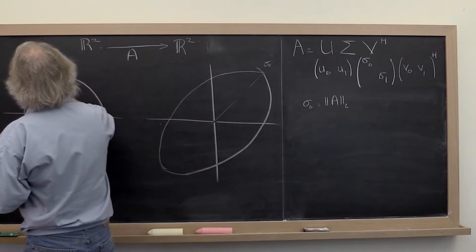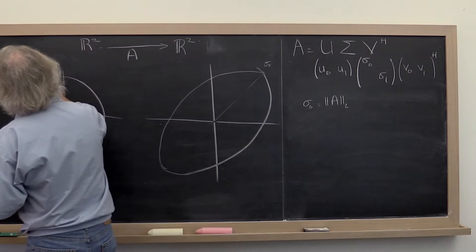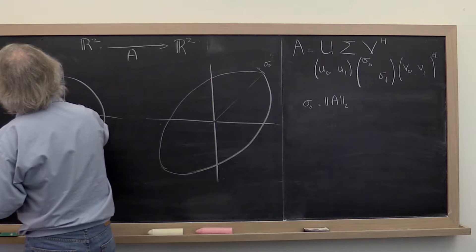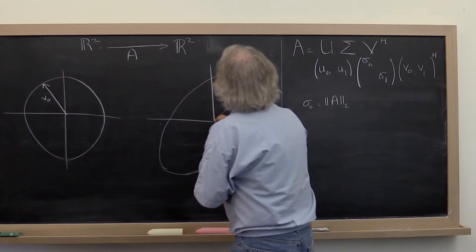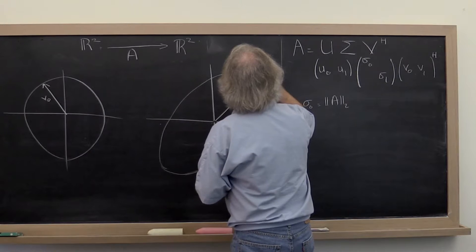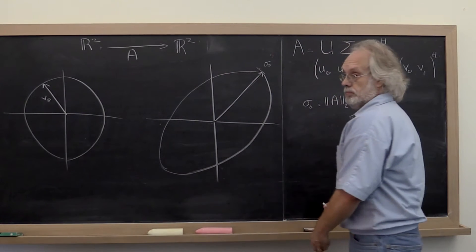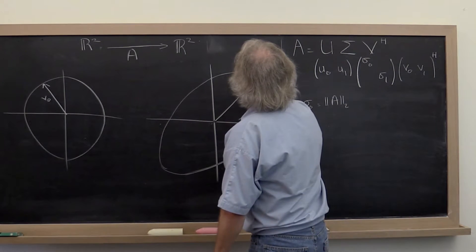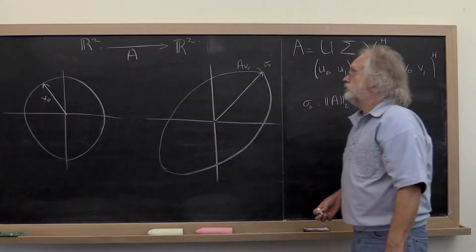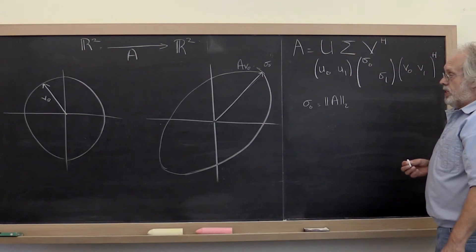That means that over here there's some vector, V0, that maps to this vector right here. So this here is A times V0.